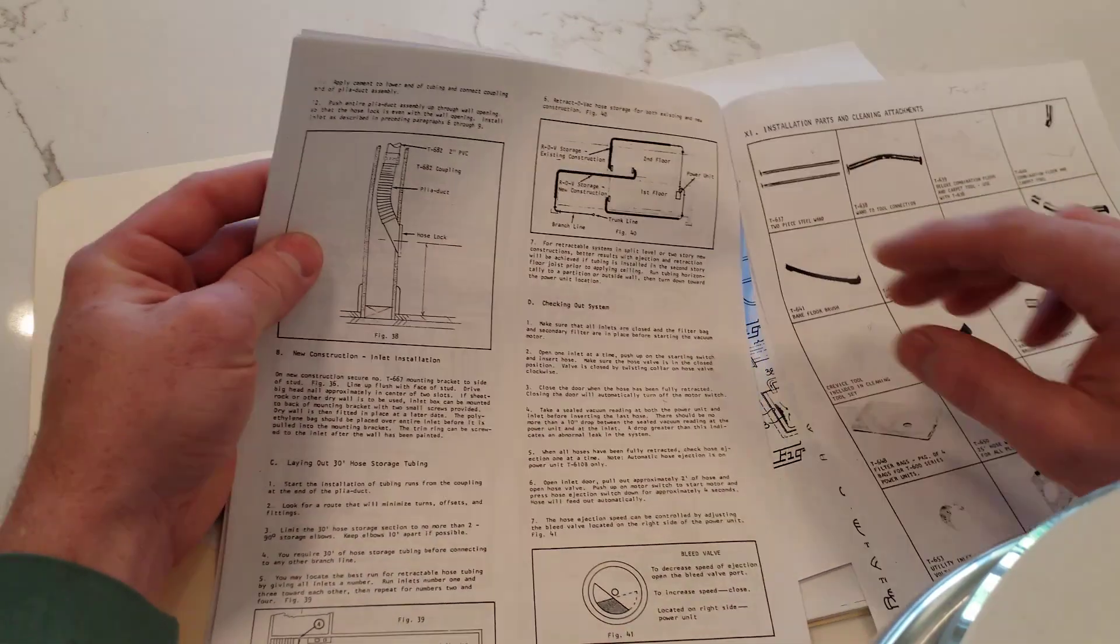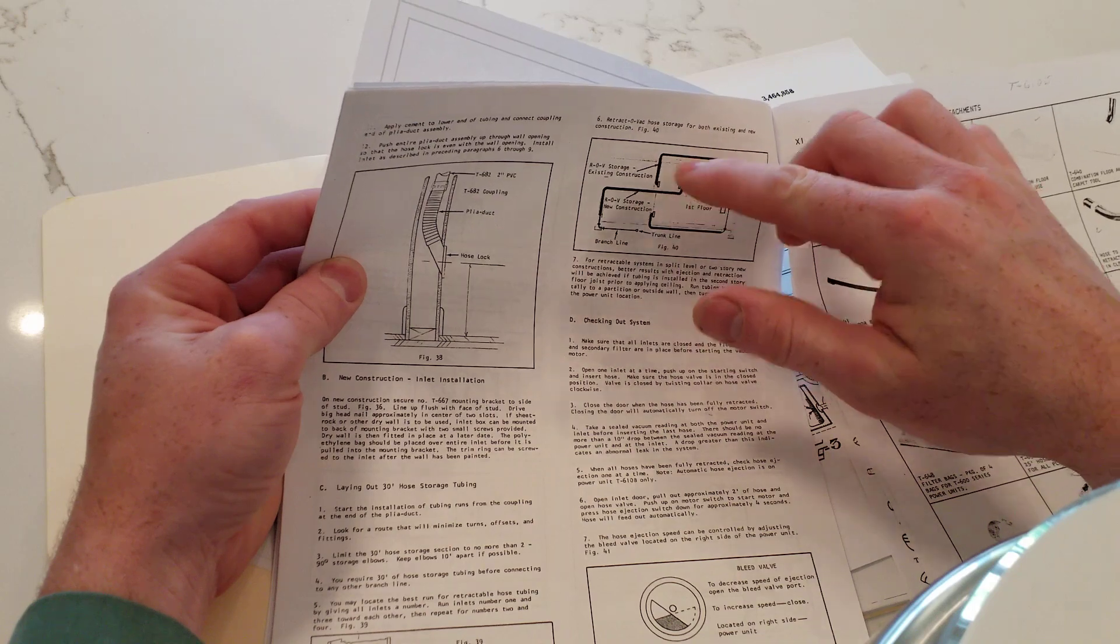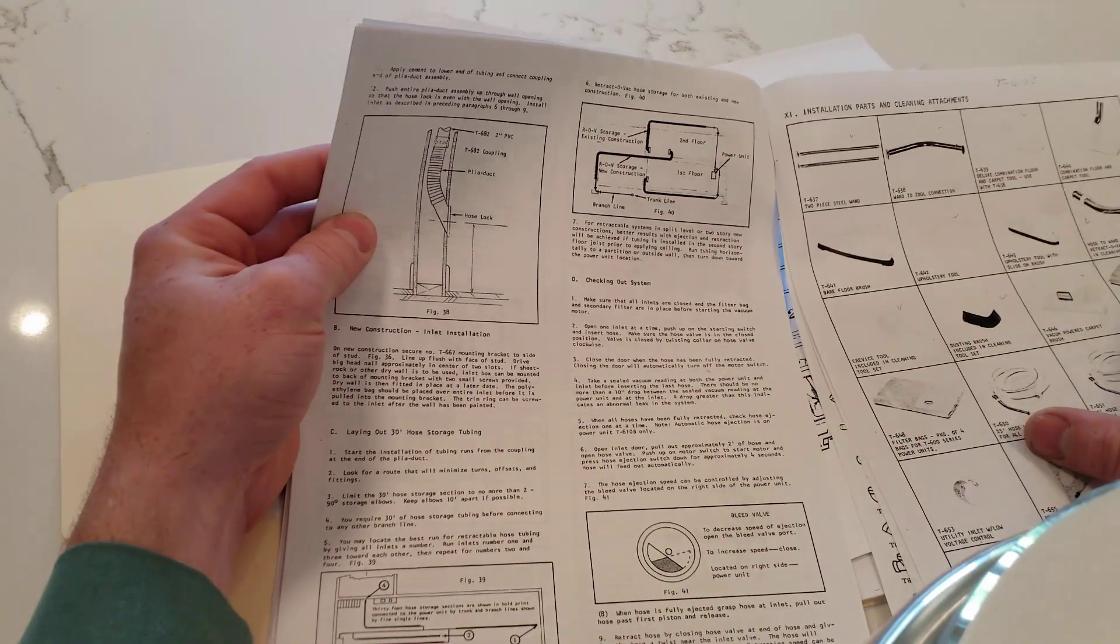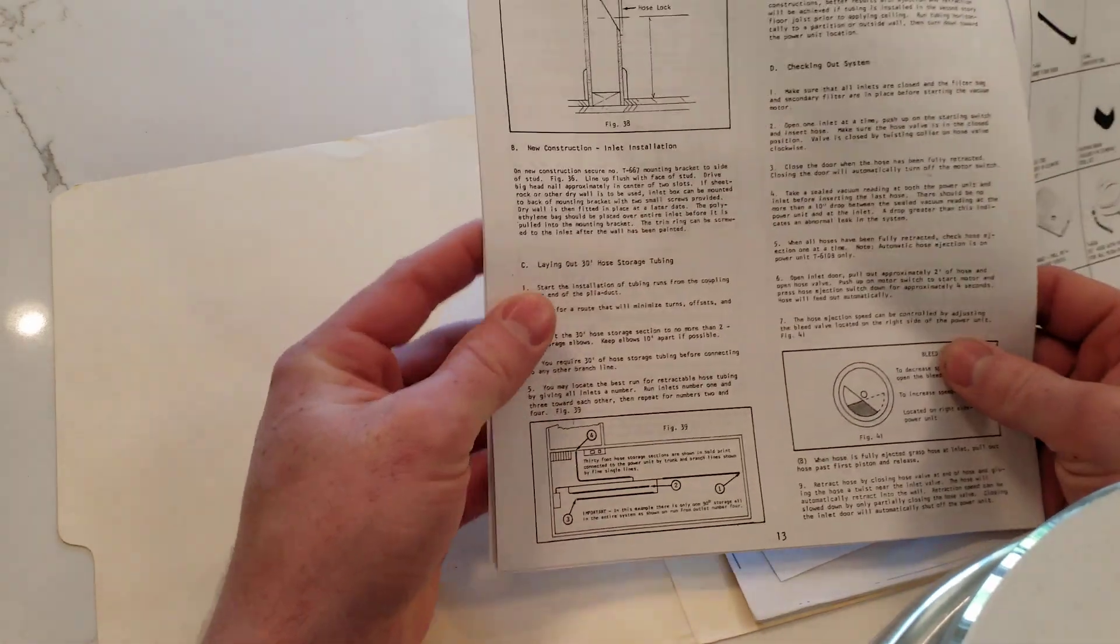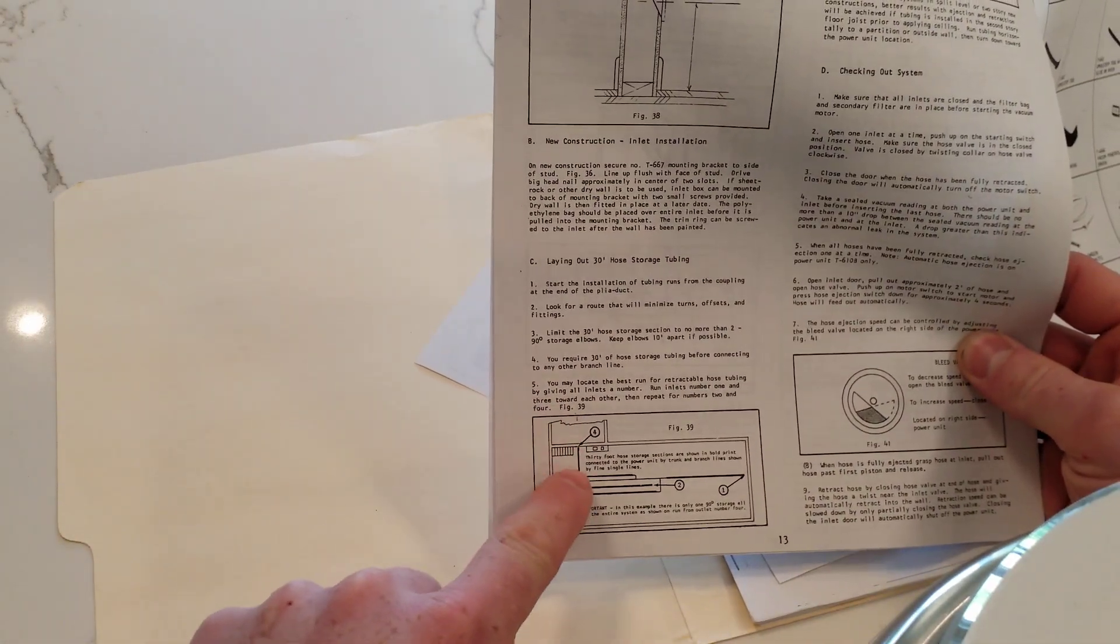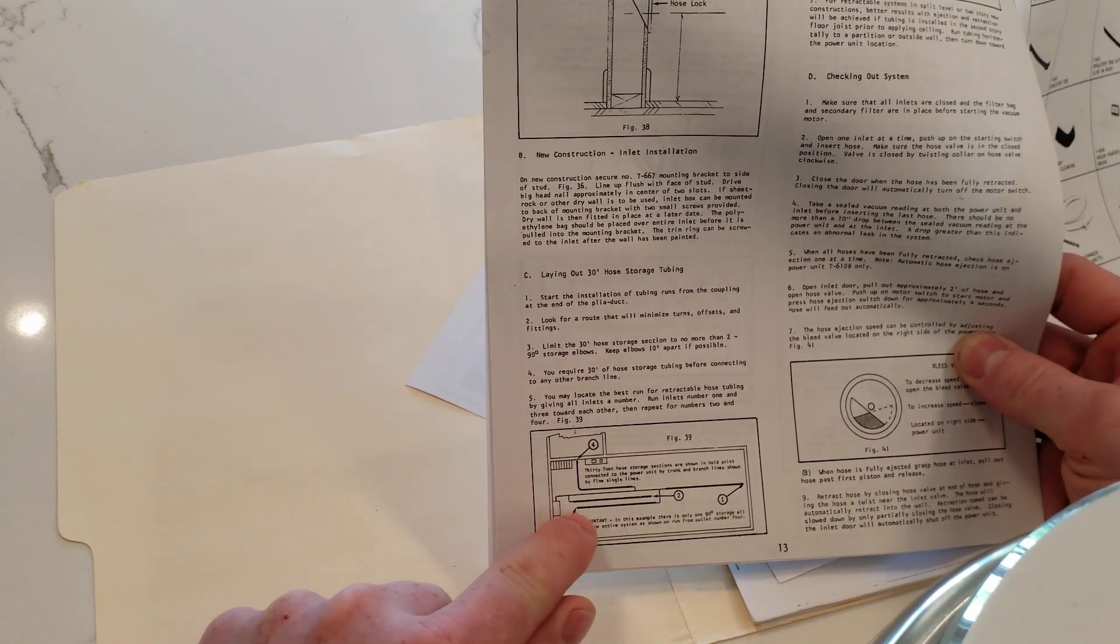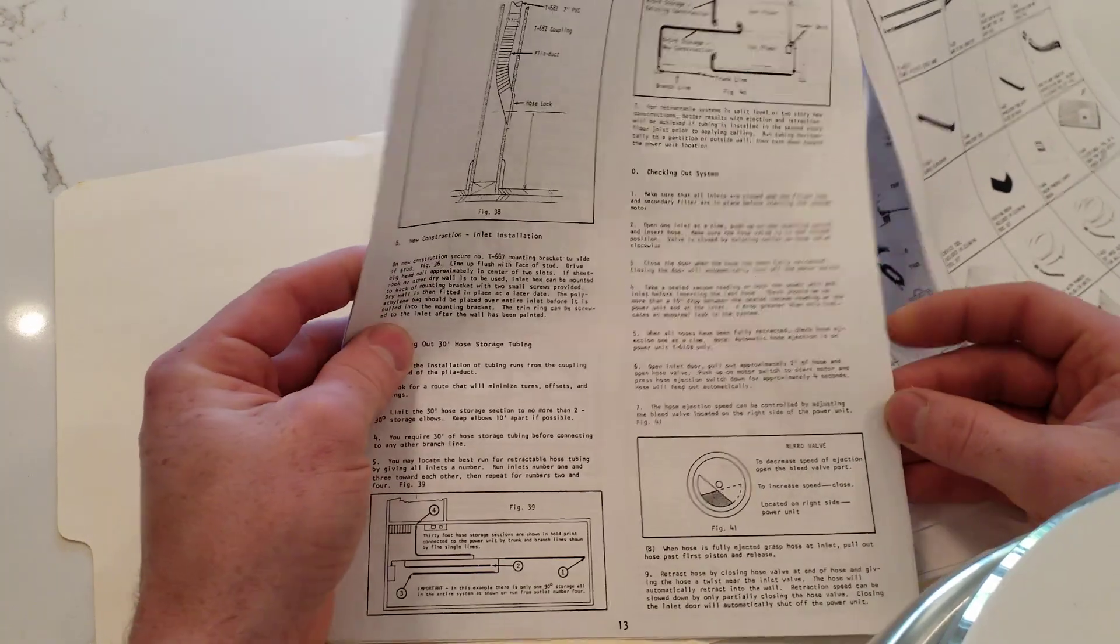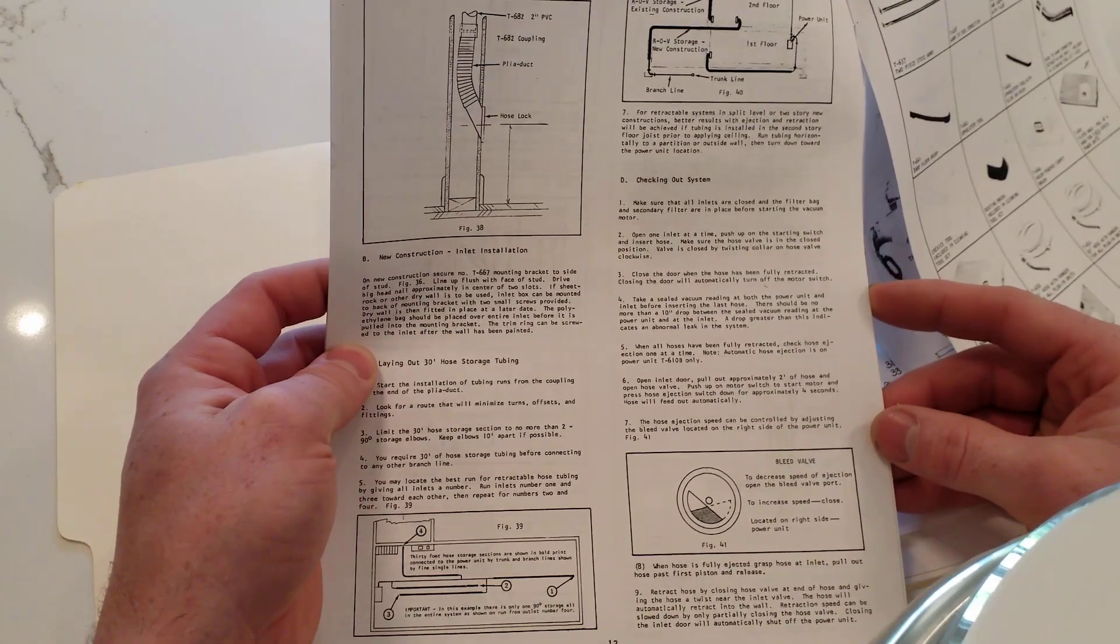And here's our little diagram of how you would run the piping, how the hose would travel through the piping. And this is a better one, actually, because it shows how sometimes you have to run away from the main line in order to have enough length to hold the hose.